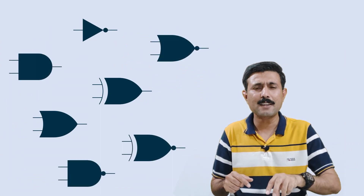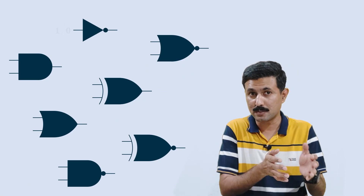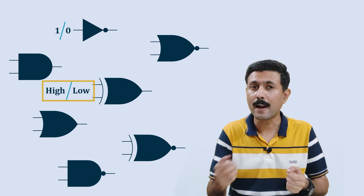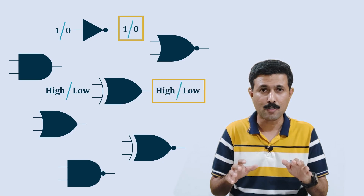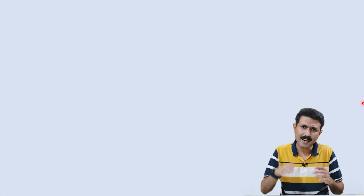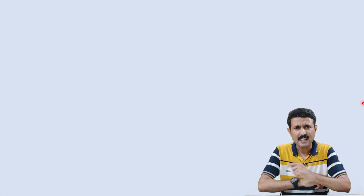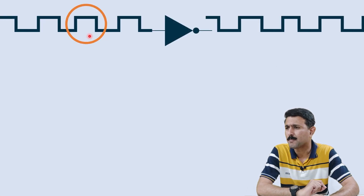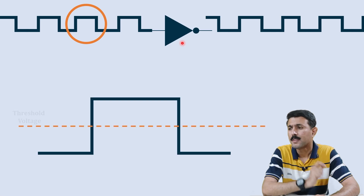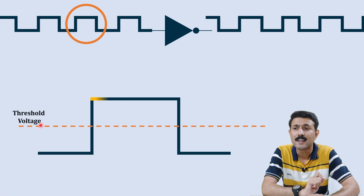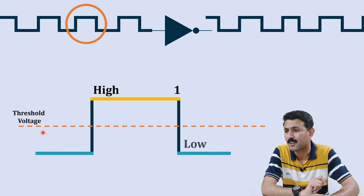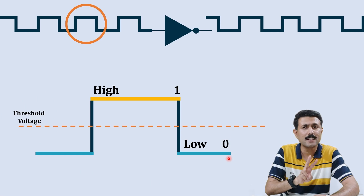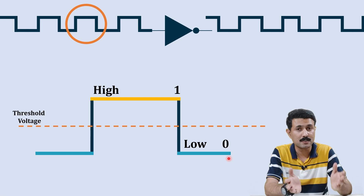In these logic gates, you can give only two types of input — either 0 or 1, or you can call it low or high. And depending on the logic gate, you will have only two states in output, either low or high, 0 or 1. The voltage level typically higher than the threshold voltage is known as high or 1, and the voltage level lower than the threshold voltage is known as low or 0 in the digital signal.